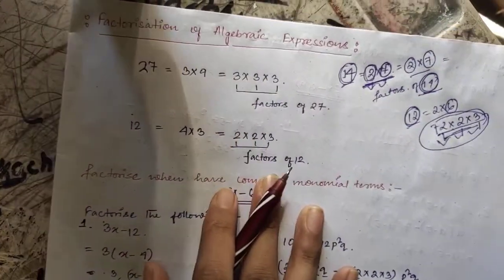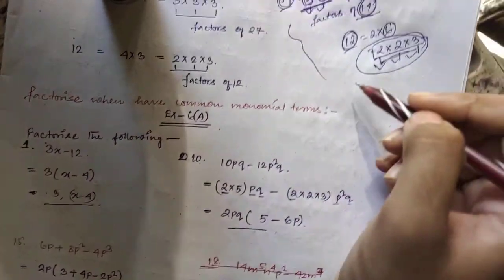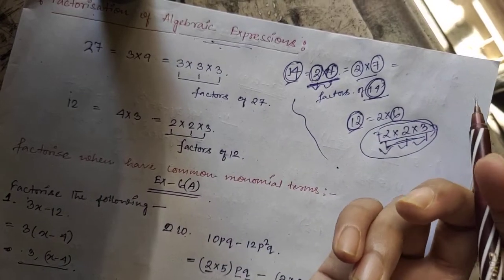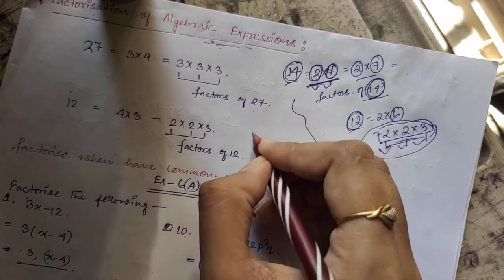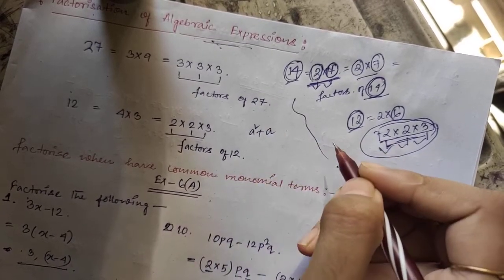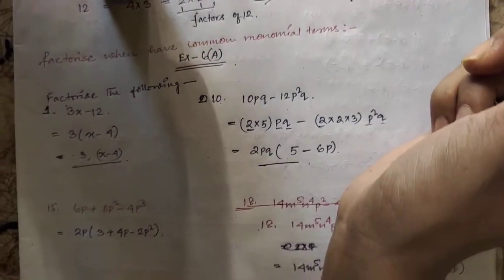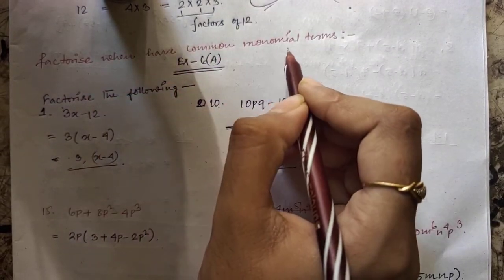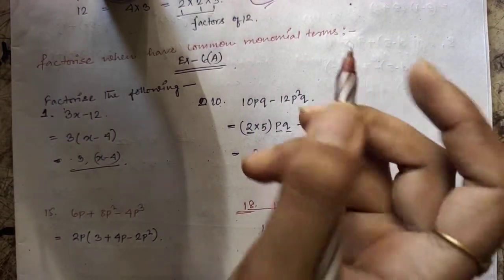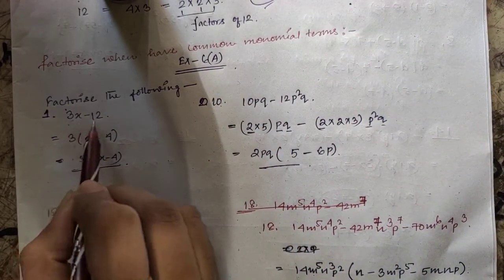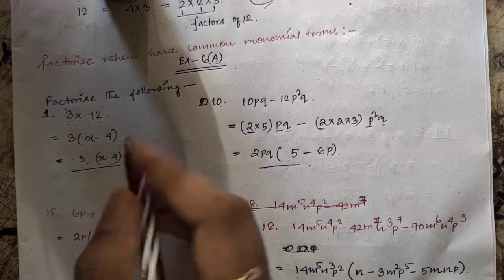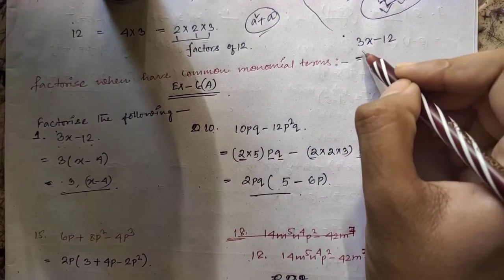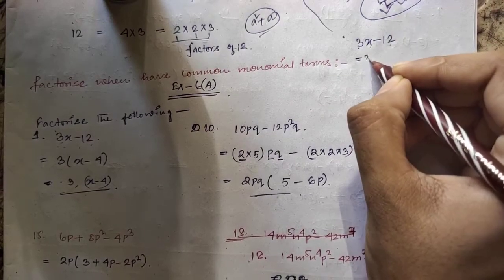These examples are all in numerical form. But in algebraic expressions — because the chapter is about algebraic expressions — the terms are given in alphabetic form, like a² + a. How do we find factors in that case? The first procedure is factorizing when we have a common monomial term. For example: factorize 3x − 12.